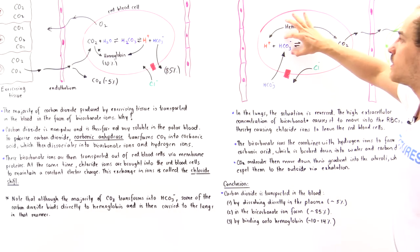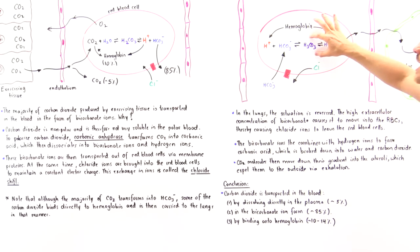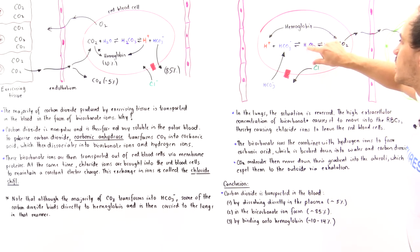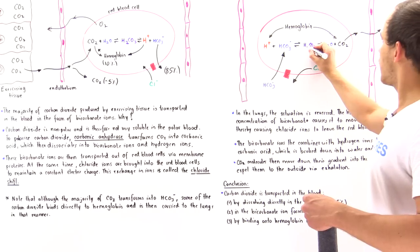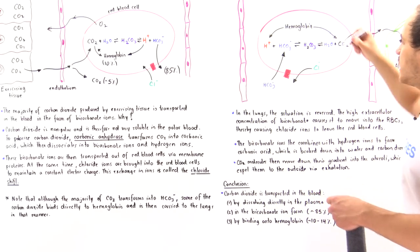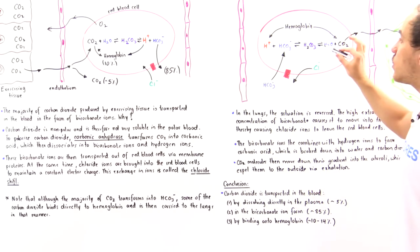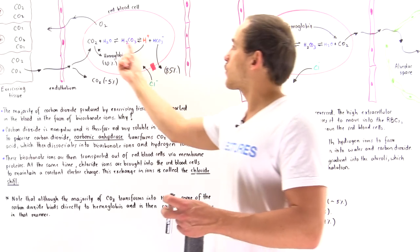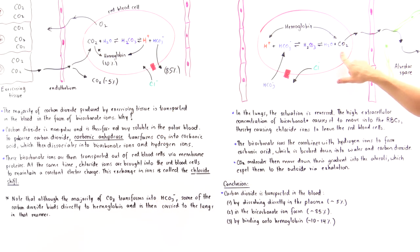Once bicarbonate ions enter the red blood cell, hemoglobin releases those H+ ions. The H+ ions combine with the bicarbonate to reform carbonic acid (H2CO3), which is then broken down by the reverse reaction of carbonic anhydrase to produce water and carbon dioxide.